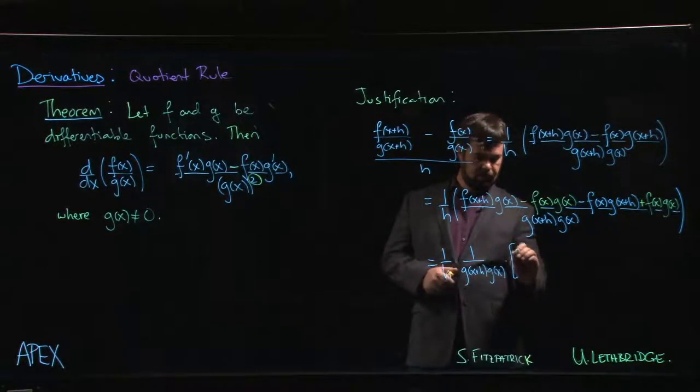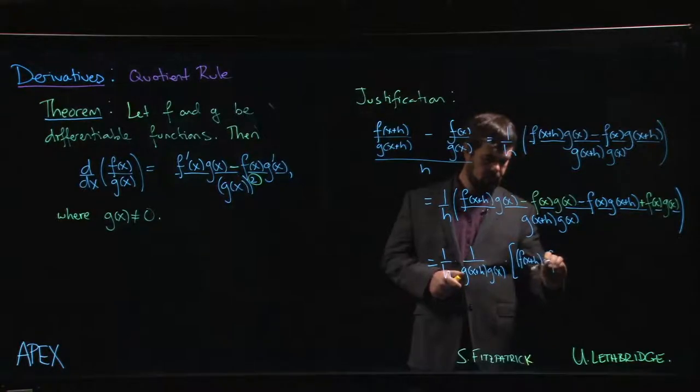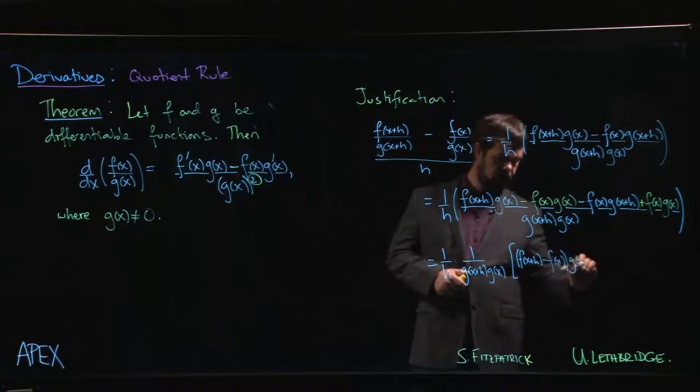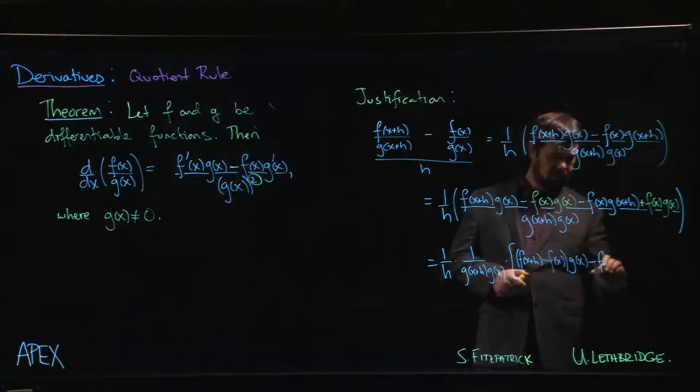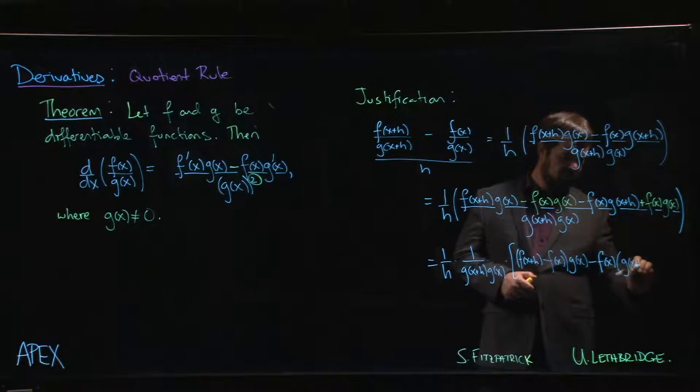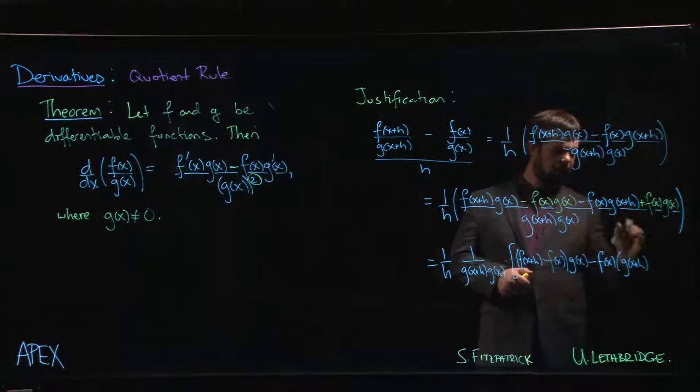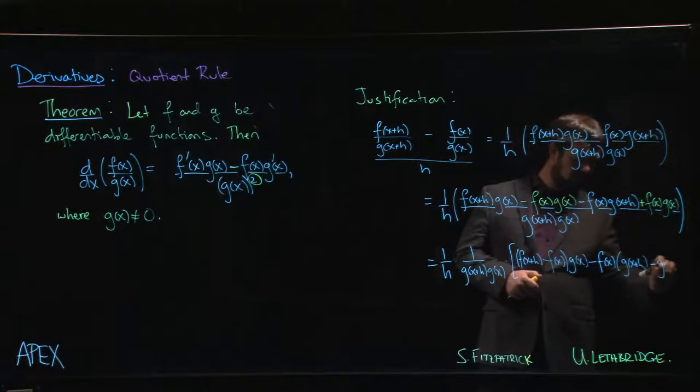we're going to have this f of x plus h minus f of x times g of x. If we put a minus sign out front, minus f of x times g of x plus h - well minus minus to get that plus right - so minus g of x.